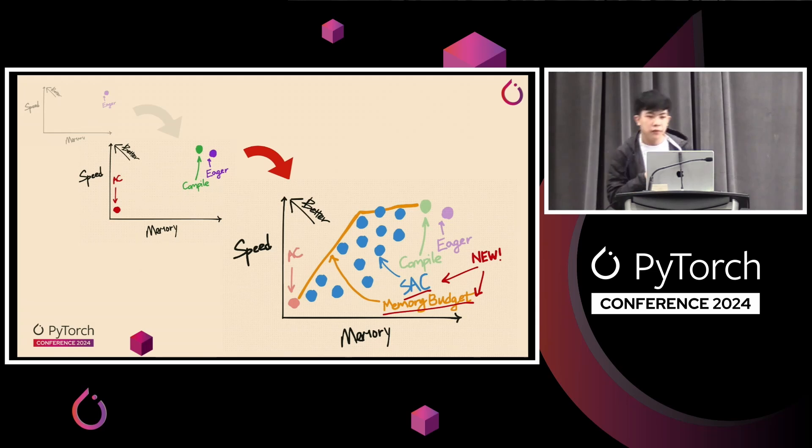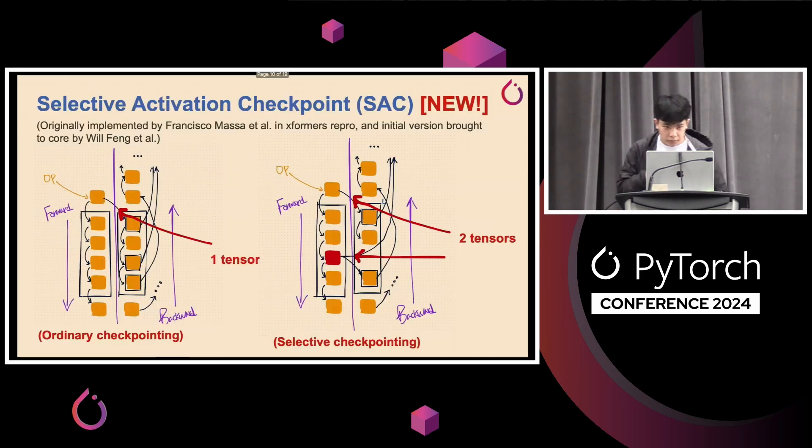So far we've covered some of the APIs that we have today. Next, I'll look at some new APIs that aim to improve flexibility and recompute, or automation. So the first thing I'll look at is selective activation checkpointing.